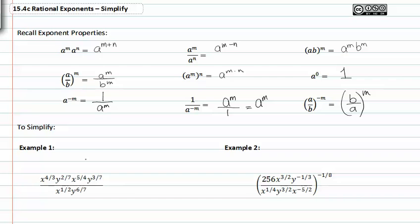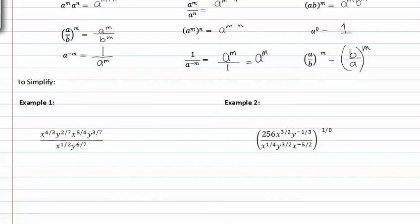Let's try example one. In example one, we have many different fractional exponents. Without getting too overwhelmed, we remember that we have matching bases. When we have matching bases, we add exponents. Let's go ahead and rewrite the matching bases next to each other.